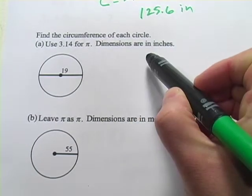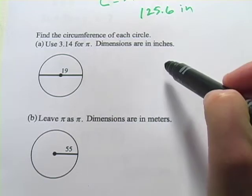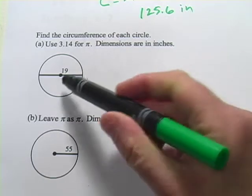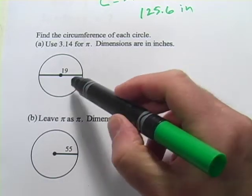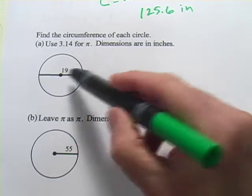This says, find the circumference of each circle. Use 3.14 for π. Dimensions are in inches. And we've got a diameter here and not the radius. They're telling us the diameter all the way across is 19.